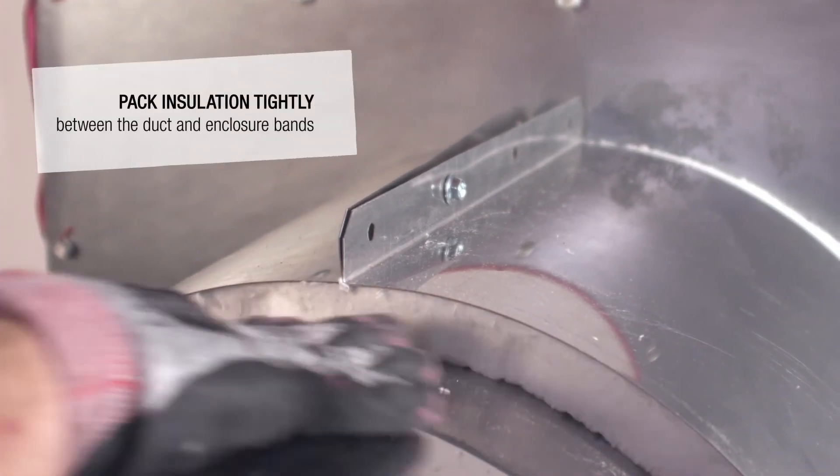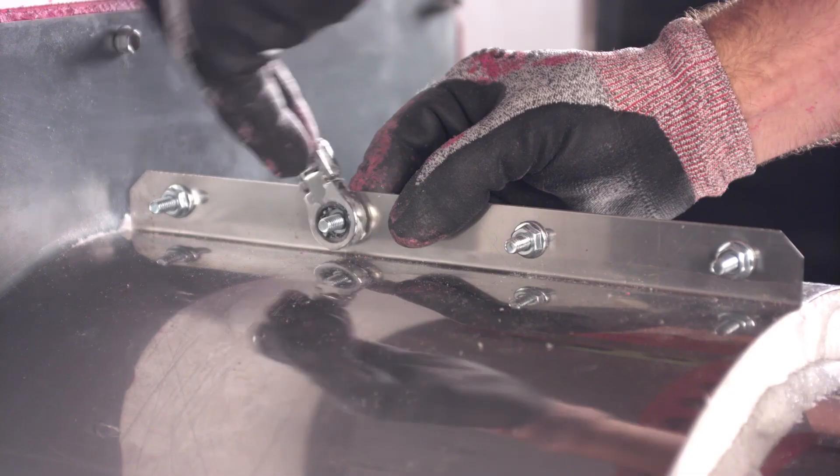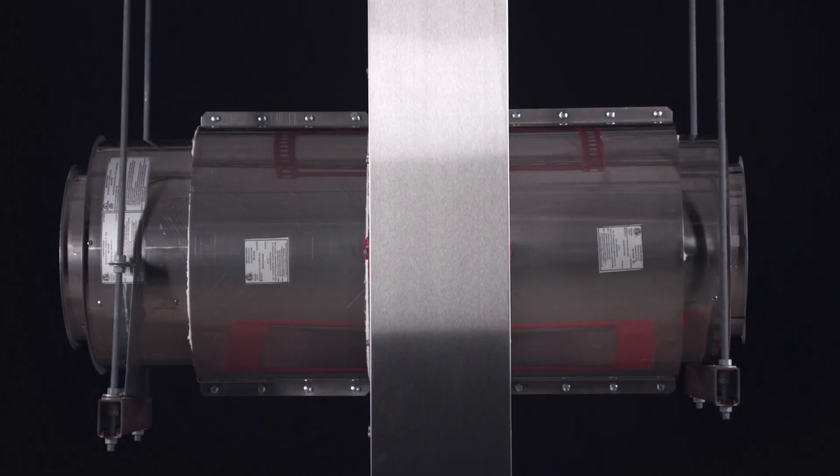Then, make sure to tightly pack the insulation between the duct and enclosure bands. Finally, completely tighten all the screws. This is an example of a properly installed insulated wall firestop.